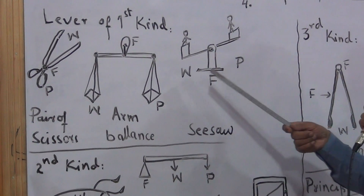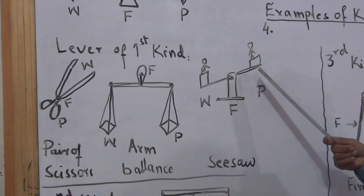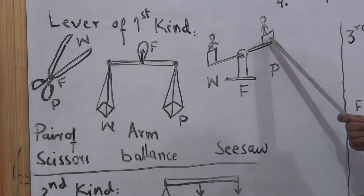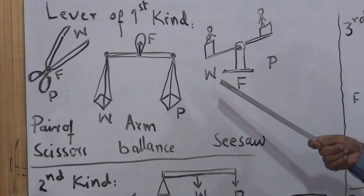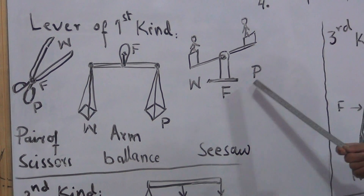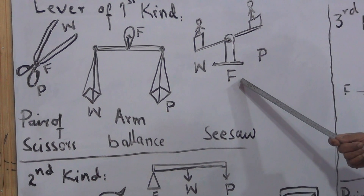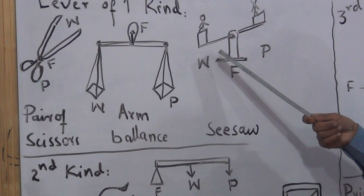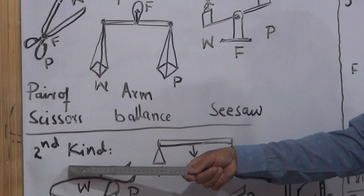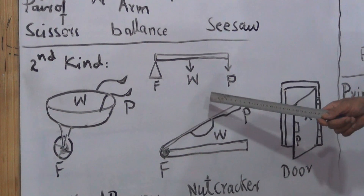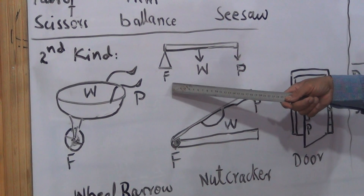You can see the child's seesaw in the park. This is the first kind of lever. The lever of the second kind — the weight is the load and the fulcrum is at the end.